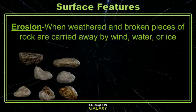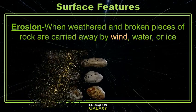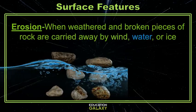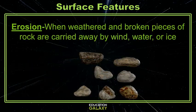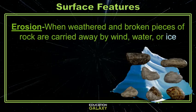Erosion is when the weathered and broken pieces of rock are carried off and away. Wind erodes rock by blowing the pieces away. Water carries the pieces downriver or in ocean currents and waves. And giant land glaciers moving across the Earth pick up a lot of dirt and move it like a snowplow.